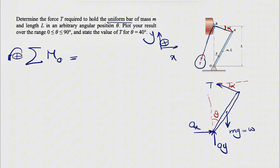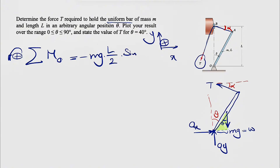The moment of the weight is clockwise, so it's negative: minus mg times the perpendicular distance from O to the line of action. Using a right triangle - highlighted in green - the hypotenuse is L/2 (the center of mass is at the bar's center), and the angle is also theta. So the perpendicular distance is (L/2)·sin(θ).